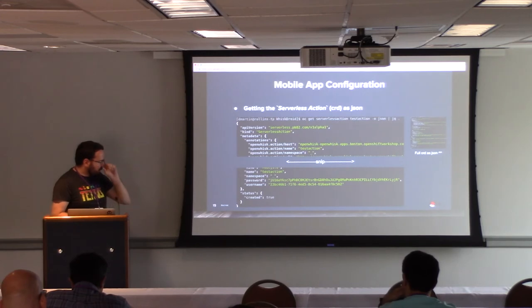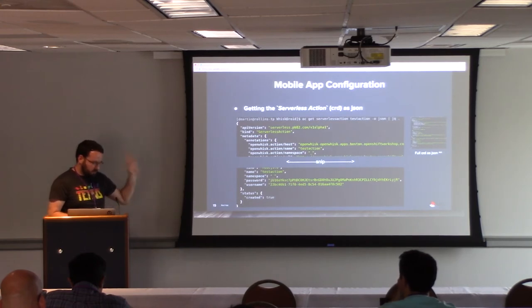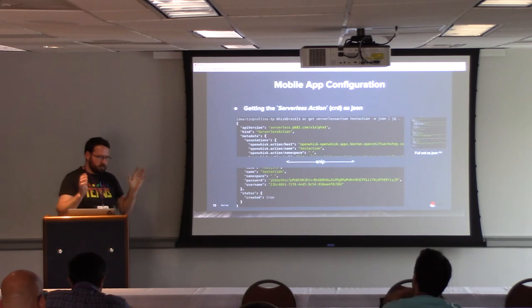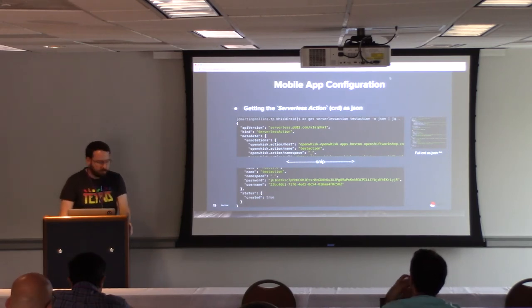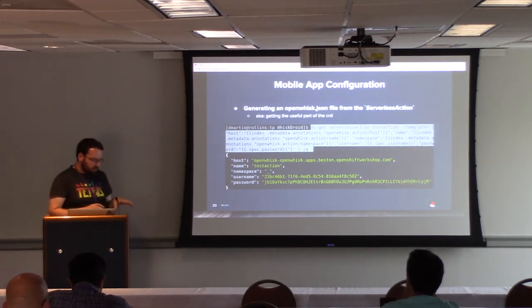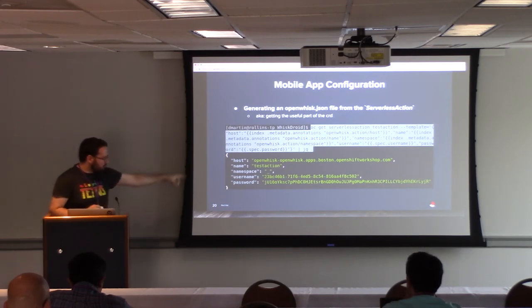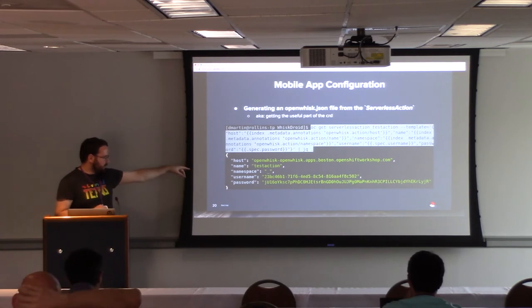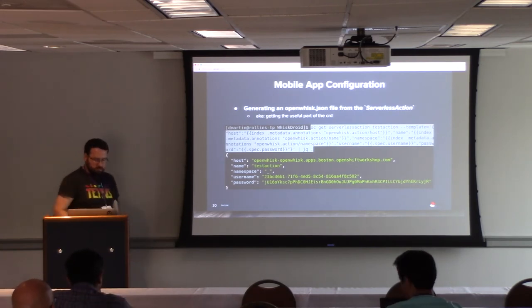If we just get the serverless action custom resource, there's a lot of stuff in there — and as a mobile developer we don't want all of it. We can use an OC get command with a template string to extract just the important bits: the host (where our OpenWhisk server is), the action name, the namespace, and credentials. That's more usable in the app — we pull it down and put it into a JSON file.